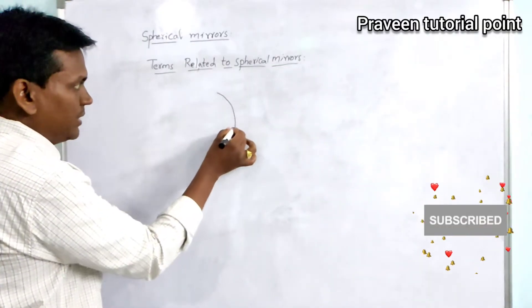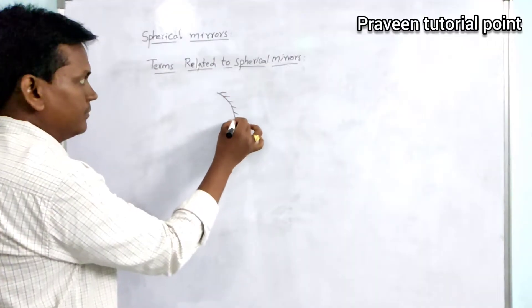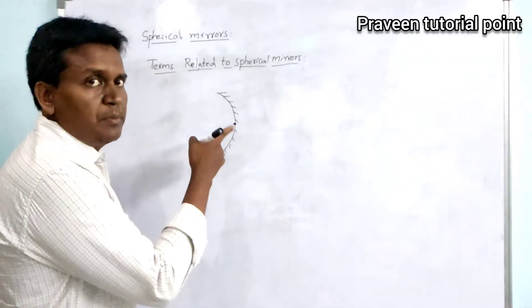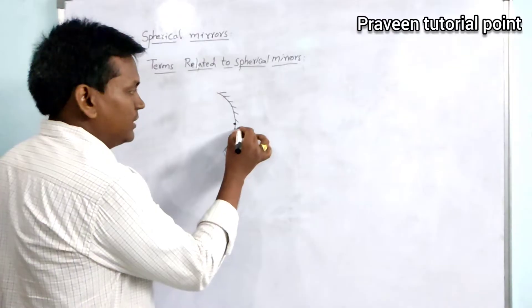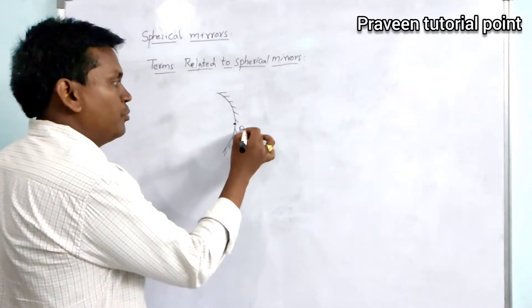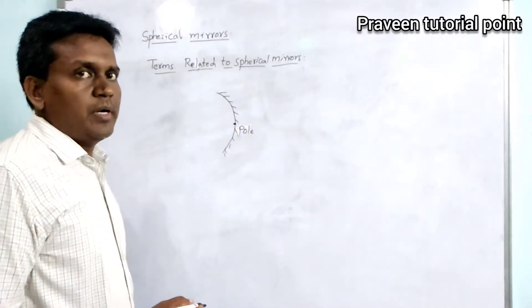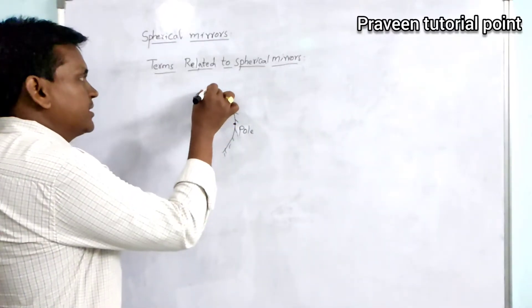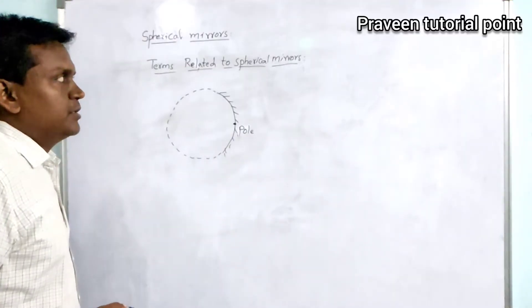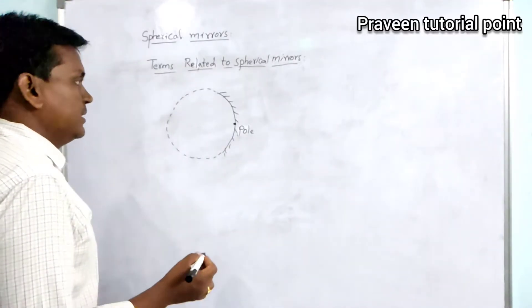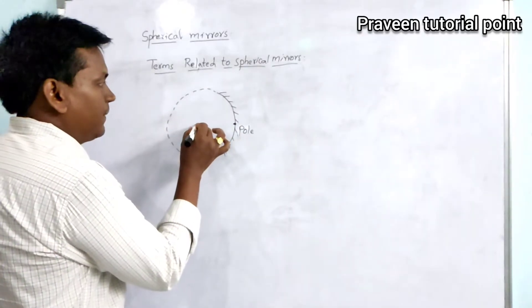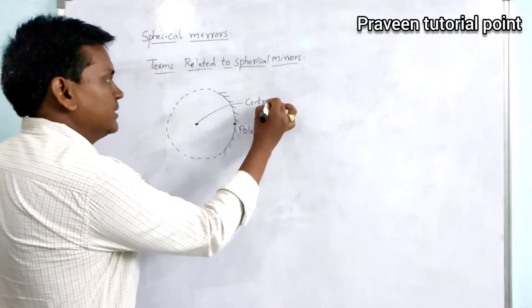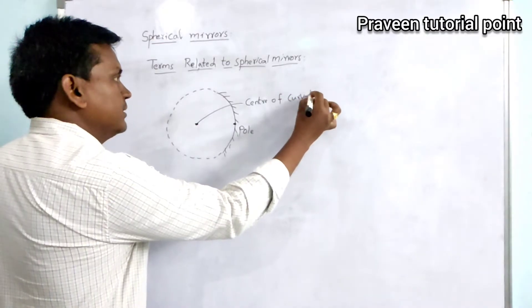If you consider a concave mirror, there is a midpoint. The midpoint of the spherical mirror — concave or convex — is called the pole. And as we discussed, the spherical mirror is a cut part of a sphere, so for that sphere there will be a center. That center is called the center of curvature.